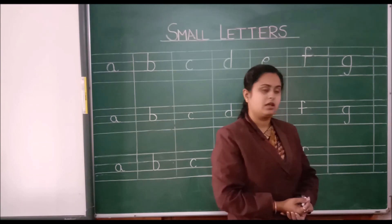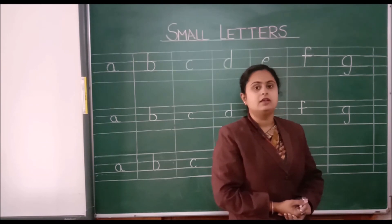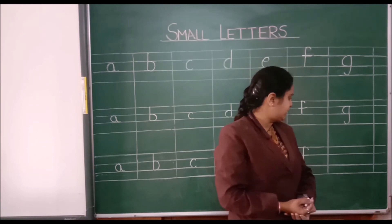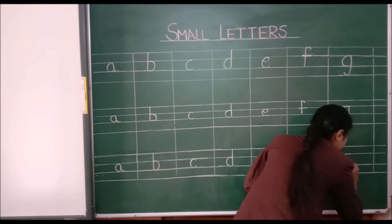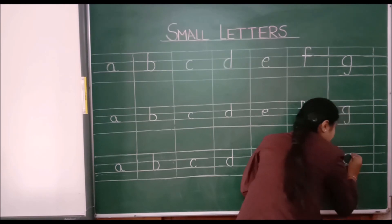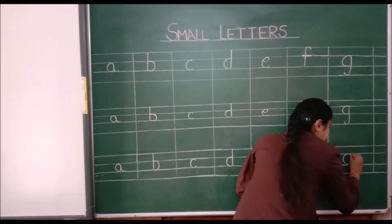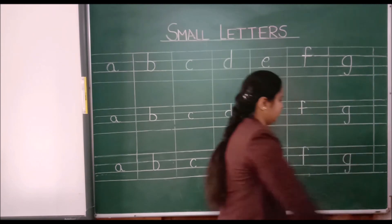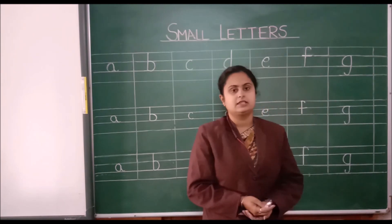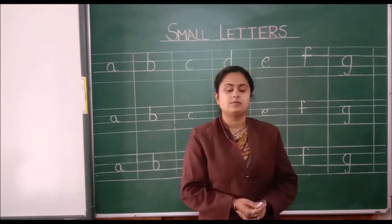G for girl. Once again, see here — you have to make a small curve like this, then a standing line and a curve like this. This is small letter G.